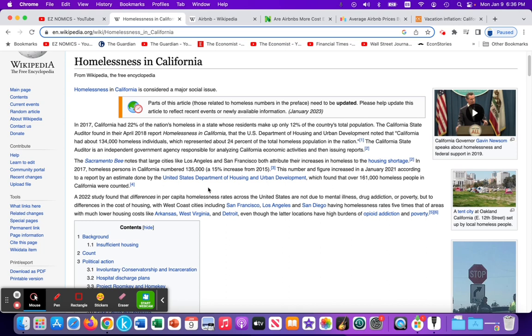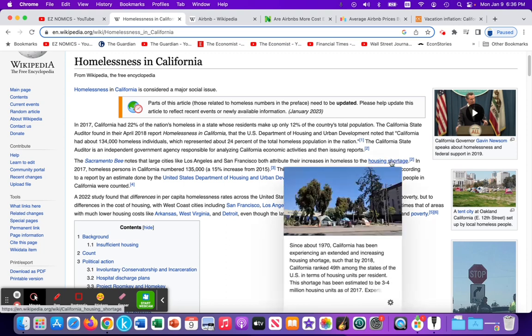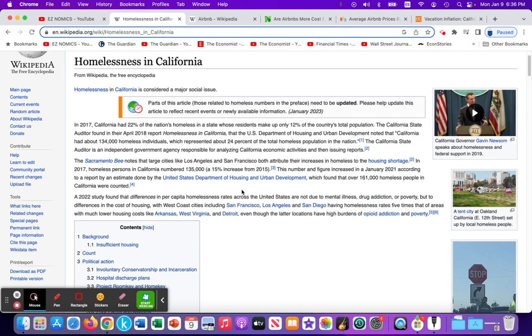In 2021, it's estimated by the United States Department of Housing that the number has gone to 161,000, from 135 to 161,000, again that 15% increase. Is the rise in homelessness in California a result of mental illness, drug addiction, or poverty? No, it's due to this housing shortage. We will see in our next video how you have people working full-time, maintaining a full-time job in the state of California and still not earning enough income or wage per month to afford rent within the state.